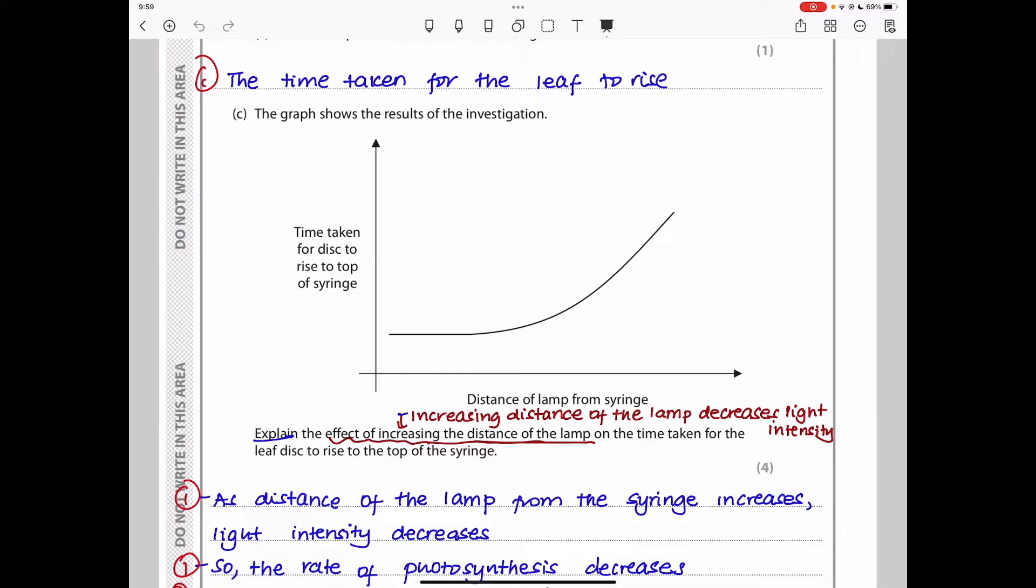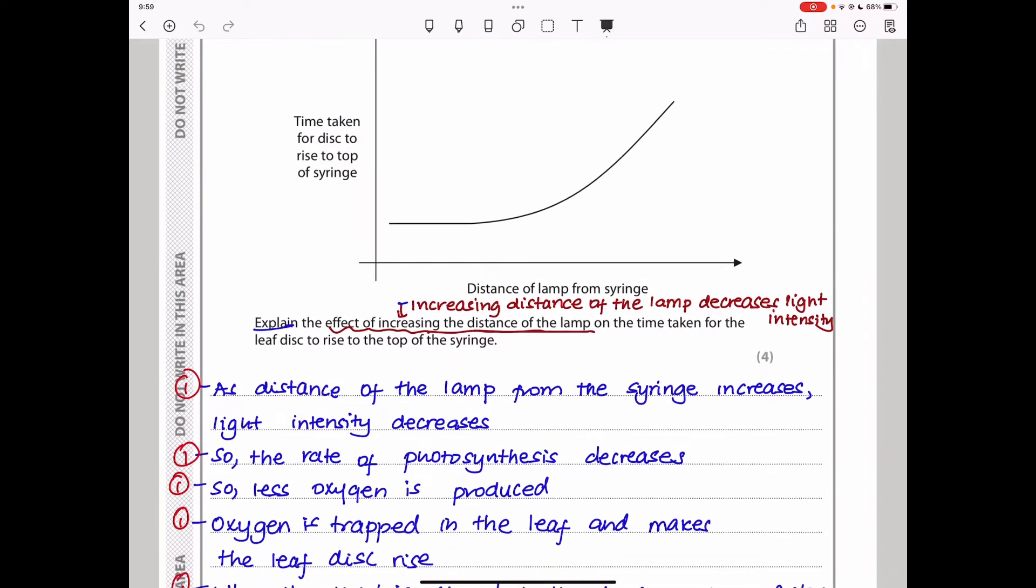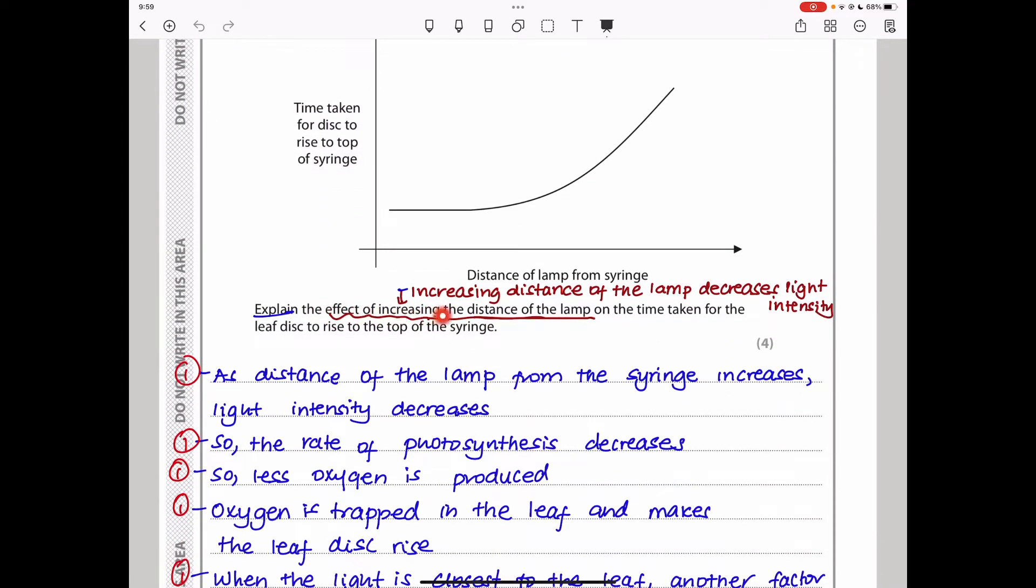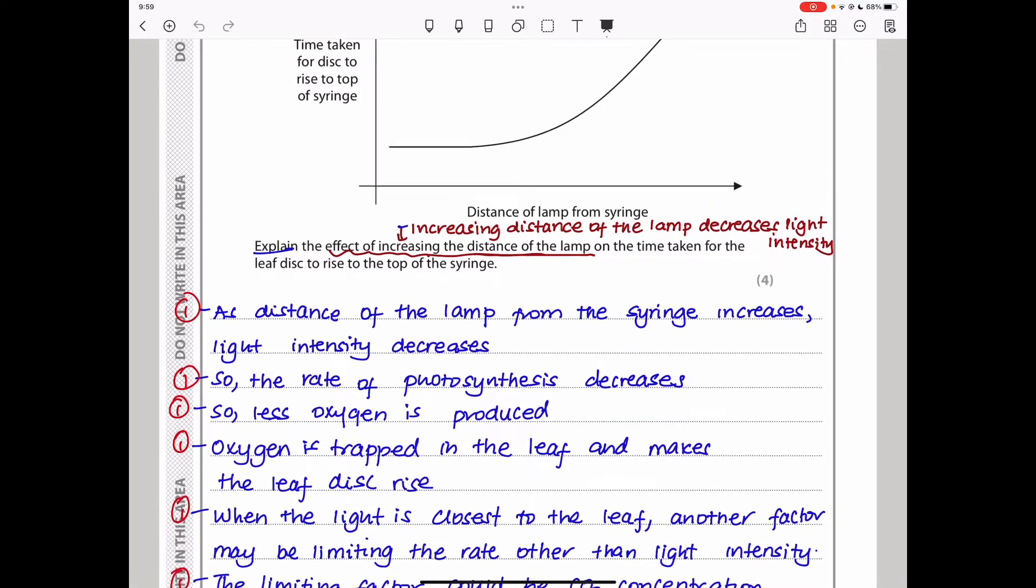The graph shows the results of the investigation. As you can see, as distance of the lamp from the syringe increases, the time taken for the disc to rise to the top of the syringe also increases. This is because as distance increases, there is going to be less light that the disc accesses, and there will be less photosynthesis, less oxygen being produced, and less rising of the leaf disc.